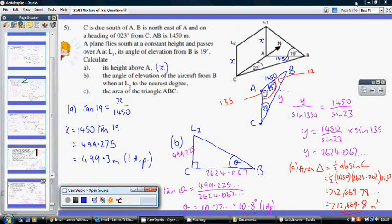So, the first bit's fine, because we're really just looking at this little right angle triangle over here. We're being asked to work out its height above A, so this length from L1 to A. So, we've got a little right angle triangle, so this is easy, because we're given that length from A to B is 1450. So, tan 19 equals opposite over adjacent, so that's X over 1450. So, multiply both sides by the 1450. X equals 1450 tan 19, which is 499.275, or 499.3 metres to one decimal place.